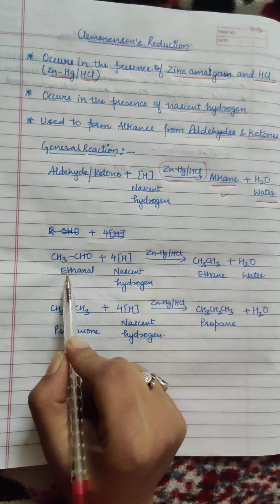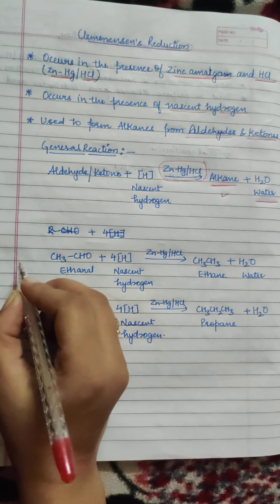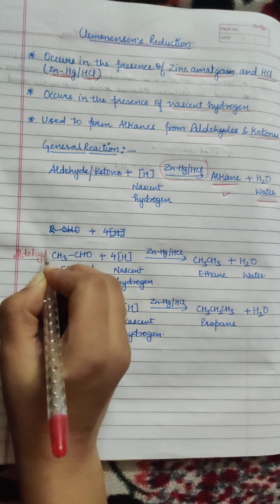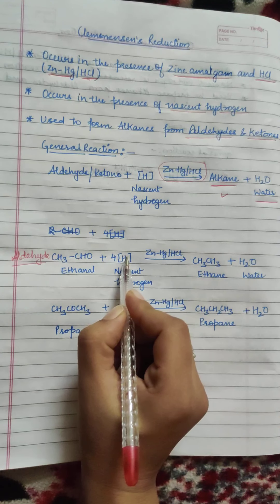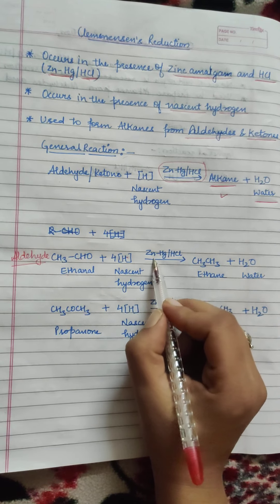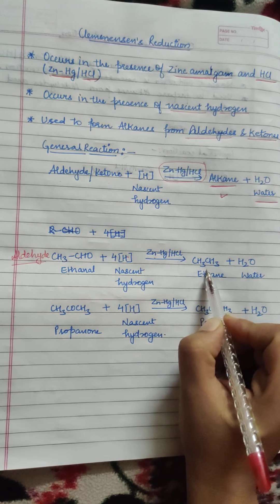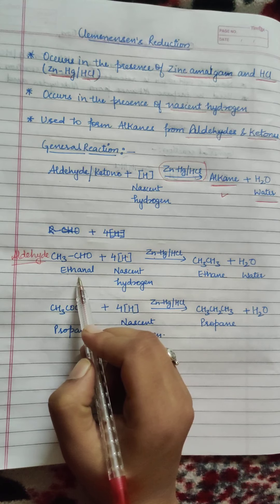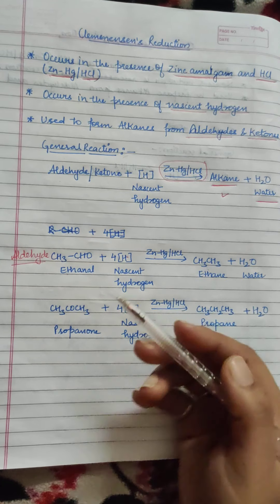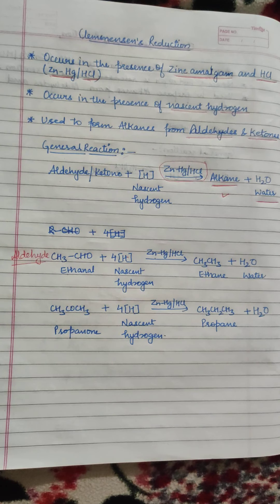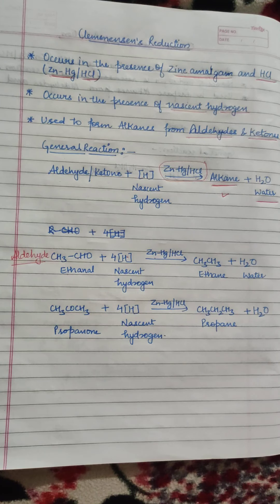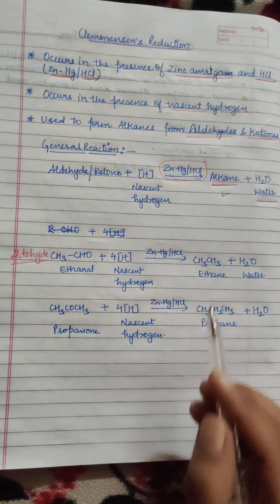I have taken one example. Suppose ethanal — formula CH3CHO, which is an aldehyde. If you take ethanal and add nascent hydrogen in the presence of Zn/Hg and HCl, you will get ethane plus water. If you use propanal, you will get propane; butanal gives butane. So the word root — the number of carbon atoms — remains the same; only the hydrogen count changes.